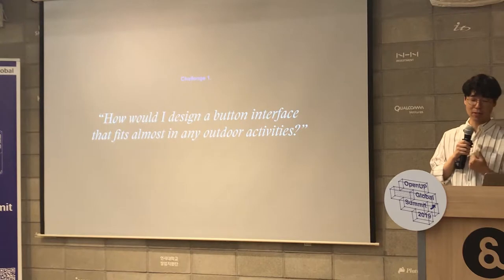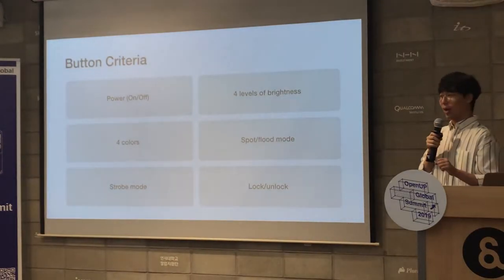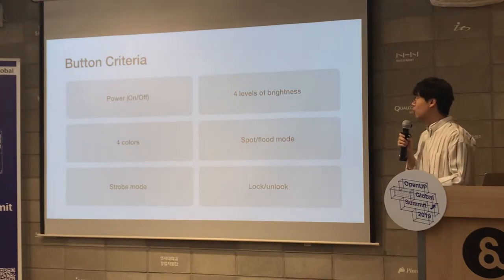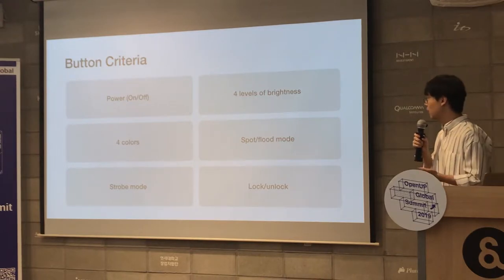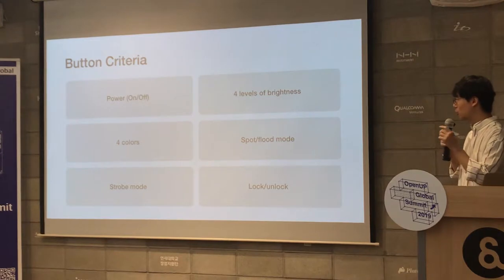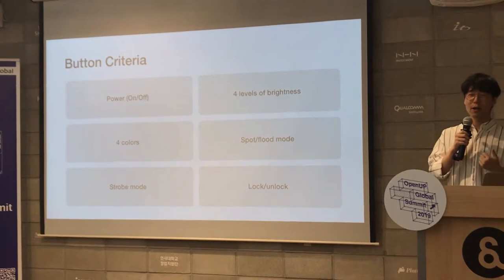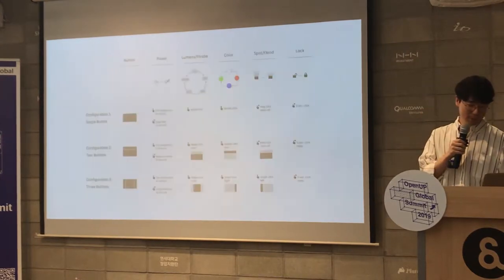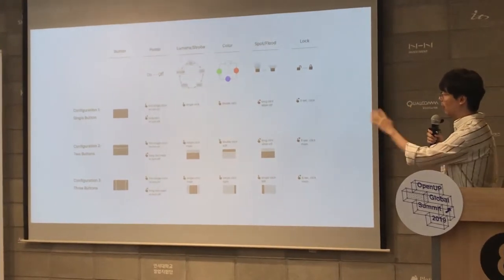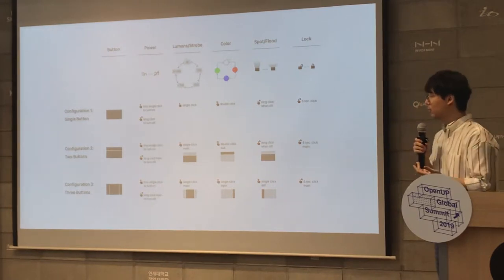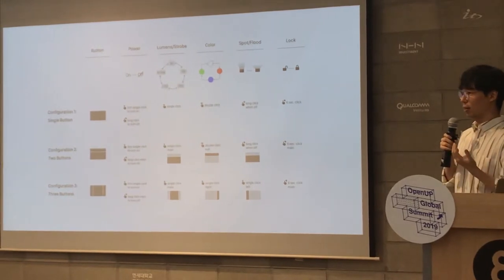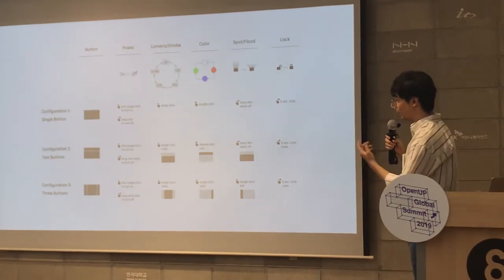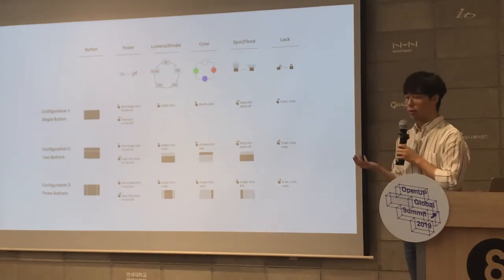So the challenge was: how would I design a button interface that fits almost any outdoor activity? Unlike conventional portable lights, I had to consider six functions: on/off, four levels of brightness, four colors, spot and flood mode, strobe mode, and lock/unlock mode. I drew a table as a starter — on the left side were one, two, and three button interfaces (I didn't think about more than four buttons, as that felt too complicated), and on the right side were the functions.